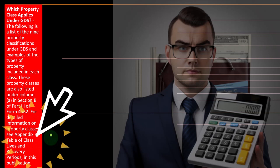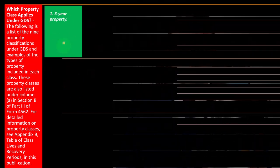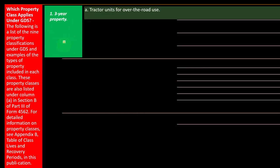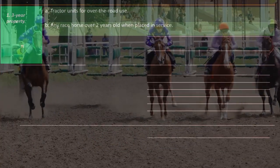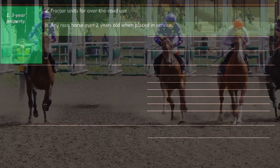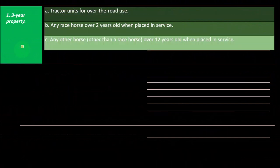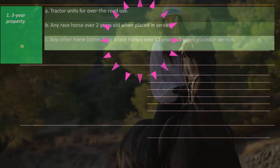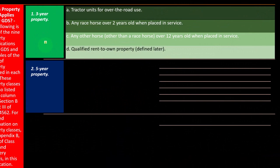For details on property classes, see Appendix B, Table of Class Lives and Recovery Periods, in this publication. Common classifications start with three-year property: tractor units for over-the-road use, any racehorse over two years old when placed in service, any other horse over 12 years old when placed in service, and qualified rent-to-own property.